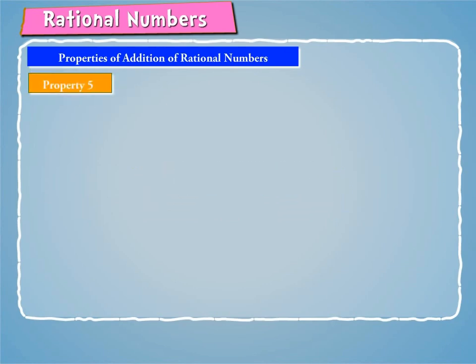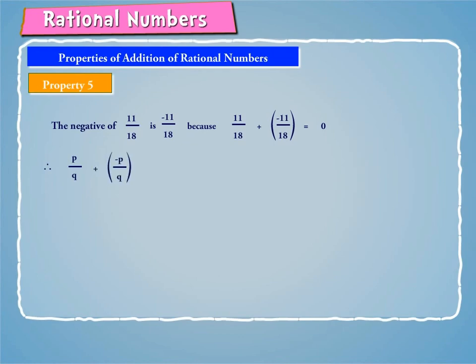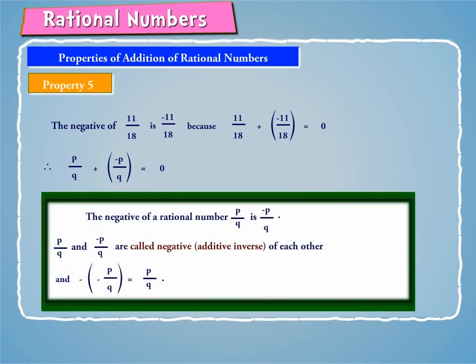Property 5: To understand the 5th property, let us consider the following example. The negative of 11/18 is -11/18, because 11/18 + (-11/18) is equal to 0. Therefore, P/Q + (-P/Q) is equal to 0. Hence, the negative of a rational number P/Q is -P/Q. Also, P/Q and -P/Q are called negatives of each other, and -(-P/Q) is equal to P/Q.